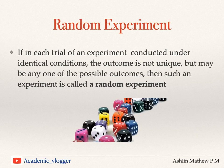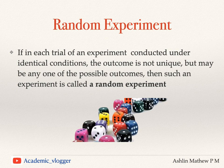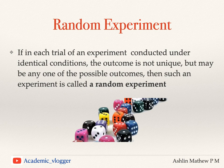A random experiment can be defined as follows: if in each trial of an experiment conducted under identical conditions the outcome is not unique but may be any one of the possible outcomes, then such an experiment is called a random experiment. For example, if I am throwing a die, in each throw the outcome may be any of the six faces — one, two, three, four, five, or six — but we don't know which face is going to appear. So such an experiment is called a random experiment.